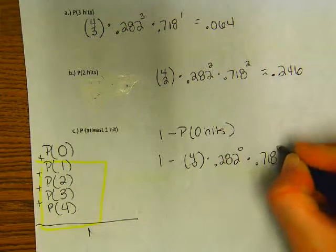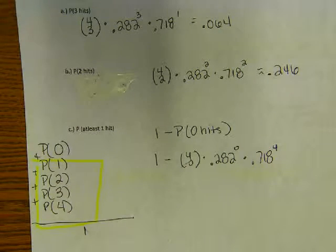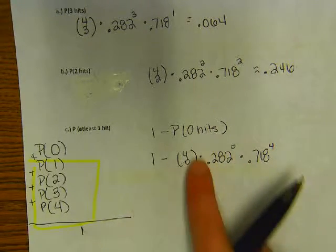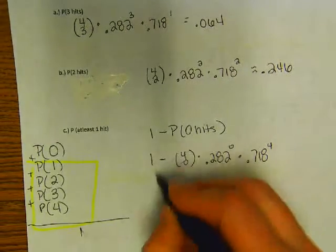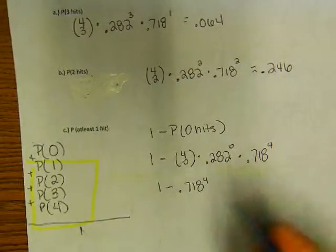How many no hits then? .718. There's four. That means if he gets no hits, right, four times. Alright. So really, should I even type that stuff in? No. Just do one minus, just white it out.